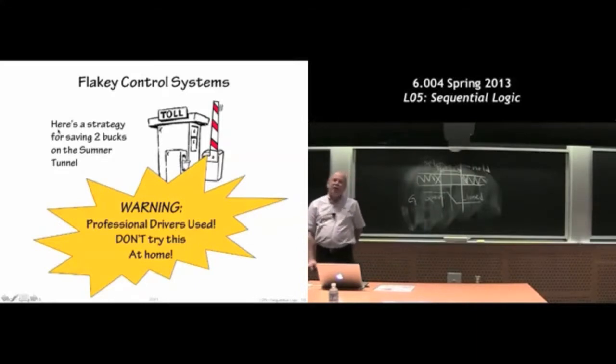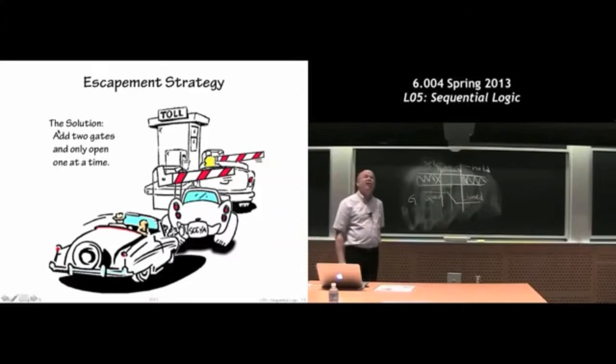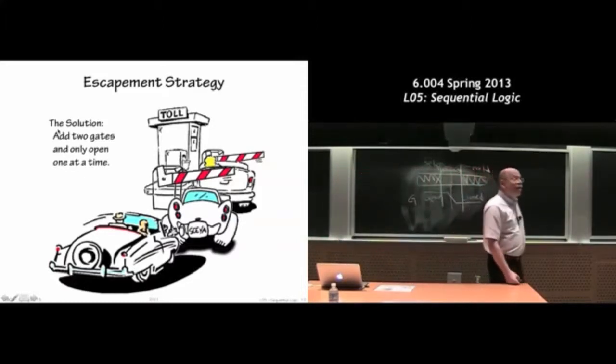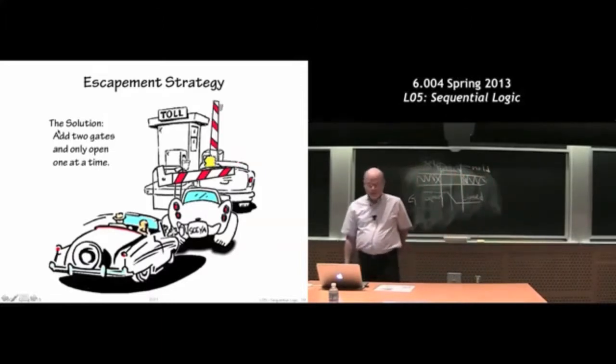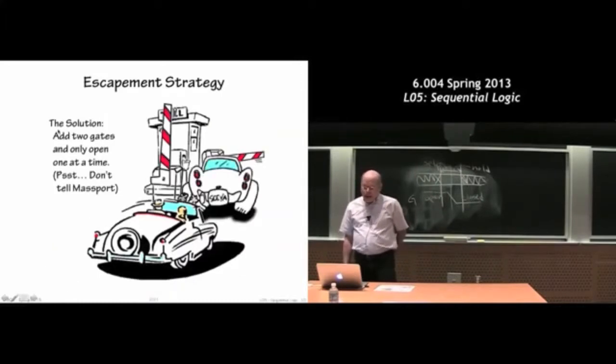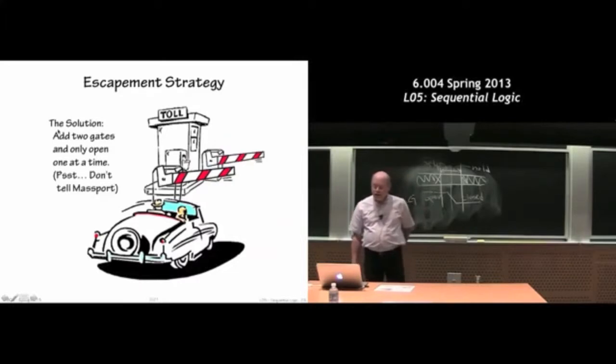What Massport should have built is an escapement mechanism. We're going to use two gates, one in front and one behind. And now, when you pay your toll, the front gate opens. That's fine. This car can go. After that car is gone, we can open a gate and let another one in to pay its toll. And when it's in front of the toll booth, we close the gate behind it, and so forth and so on.